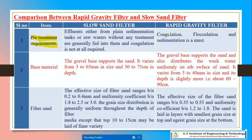Coagulation, flocculation, and sedimentation are required in the rapid sand filter because the rate of filtration is high. Therefore, the water must be coagulated and flocculation has to be done in the sedimentation tank, otherwise fine particles cannot be removed in the rapid sand filter. But for the slow sand filter, just plain sedimentation is enough — without any coagulation, water can be directly fed into a slow sand filter.